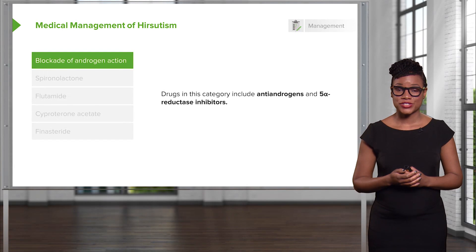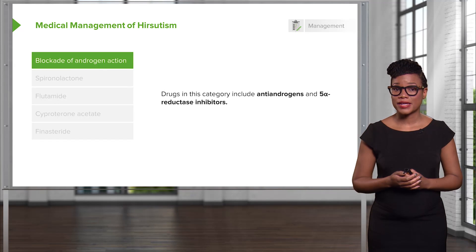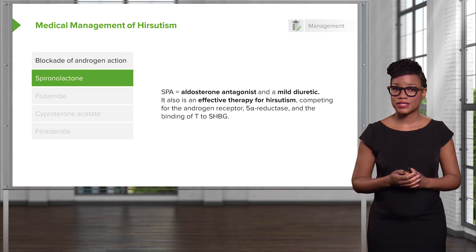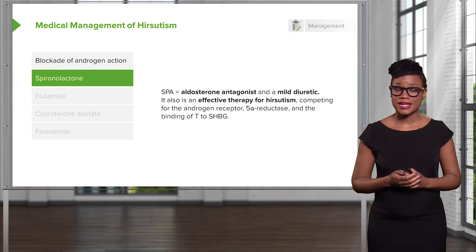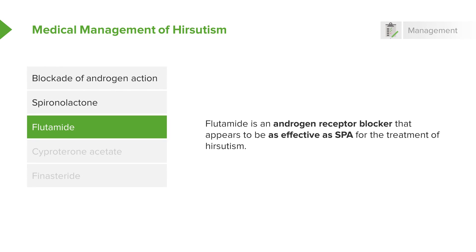There are other medications that we can use instead of or with oral contraceptive pills — these include medications that block androgen action. One of these is spironolactone, an aldosterone antagonist and mild diuretic. It's an effective therapy because it blocks the androgen receptor, decreases 5-alpha-reductase, and competes for the binding of testosterone with sex hormone binding globulin. Flutamide is another alternative; however, caution — this may be on your USMLE exam. There have been reports of liver enzyme abnormalities and hepatitis. Patients also get green urine, which can be very distressing, and excessive dryness of skin and scalp hair. However, it is known to be an androgen receptor blocker and is as effective as spironolactone.